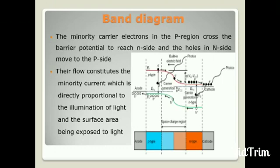Band diagram of solar cell: The minority charge carriers—electrons in the P region—cross the barrier potential to reach the N side, and the holes in the N side move to the P side, which is shown in the diagram. Their flow constitutes the minority current, which is directly proportional to the illumination of light and the surface area being exposed to light.